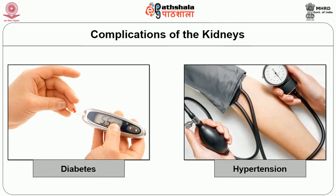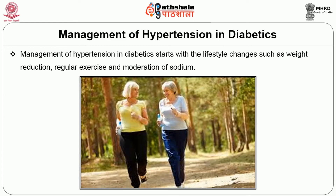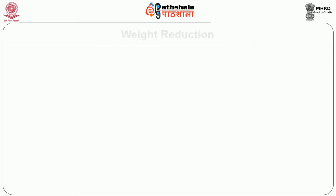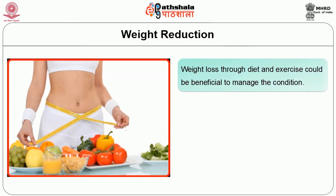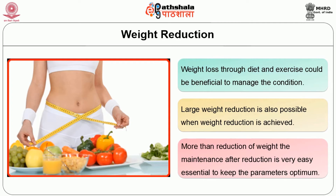Understanding the complications, let us move on to the medical nutrition therapy needed for diabetes and hypertension. Management of hypertension in diabetics starts with lifestyle changes such as weight reduction, regular exercise, and moderation of sodium. Weight loss through exercise could be beneficial to manage the condition. If a person is obese, they have to reduce weight based on body mass index and follow a diet recommended by the medical team. More than reduction of weight, maintenance after reduction is also very essential to keep the parameters optimum.